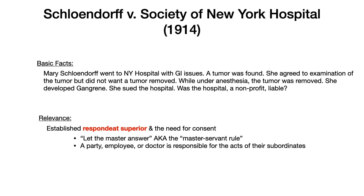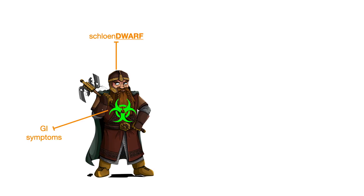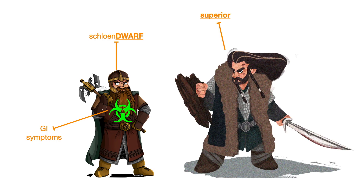How do you memorize this? Schloendorf reminds me of dwarf. This is our Schloendorf — Gimli from Lord of the Rings — and the sigil on his armor is a toxic symbol, which can help you remember that the individual was experiencing GI symptoms. The important thing is to know that Schloendorf is associated with respondeat superior, and in our image, we have the dwarf's superior. This image will help you memorize that Schloendorf is relevant because of respondeat superior.